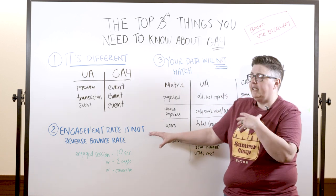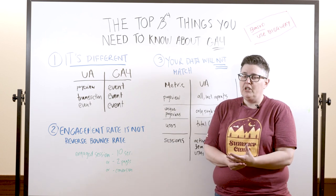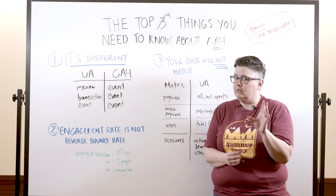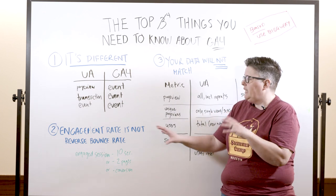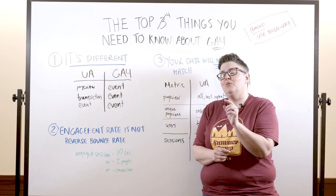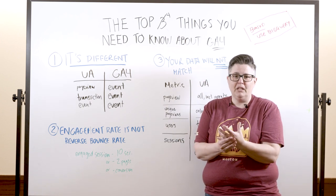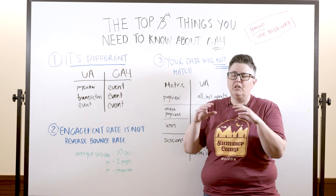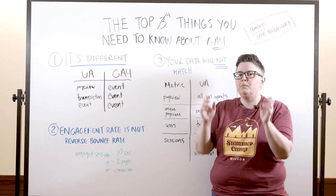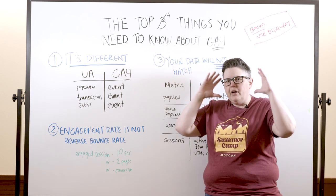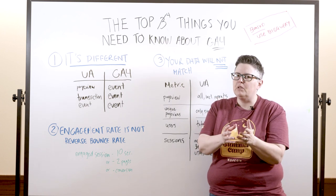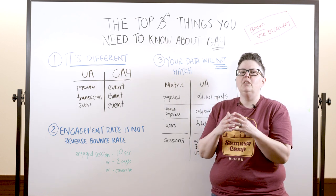Second thing: engagement rate is a new metric in GA4. They do have bounce rate — they recently announced it, and I'm annoyed at it. Engagement rate is not reverse bounce rate, but it is in GA4. In Universal Analytics, bounce rate was a metric that people reported on all the time, even though they shouldn't have. I hate bounce rates so much — picture a dumpster fire GIF right now across your screen.